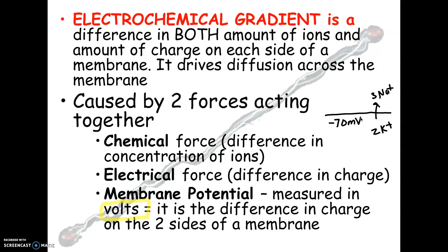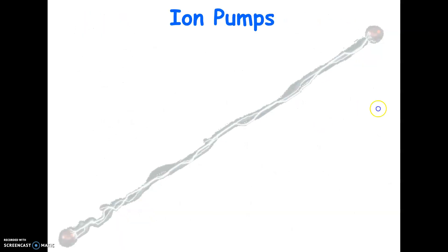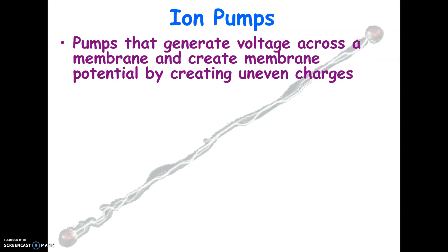That membrane potential sets up a scenario for nerve impulses. When a nerve gets stimulated, sodium gated channels open. All the sodiums that have built up outside come flooding in, causing the inside to temporarily become positive, which initiates a nerve impulse. Pumps that generate voltage are called ion pumps because they're pumping ions, and the best example in eukaryotic cells is the sodium-potassium pump.